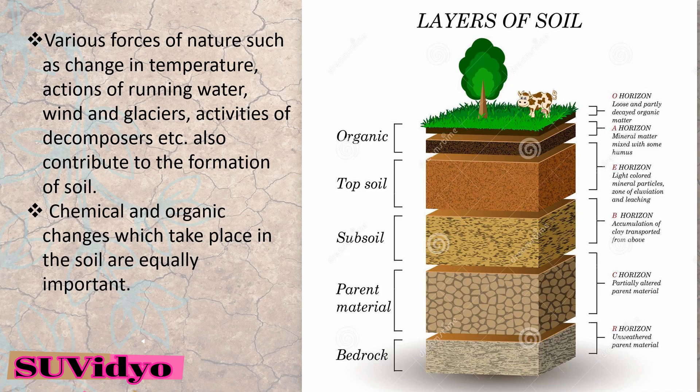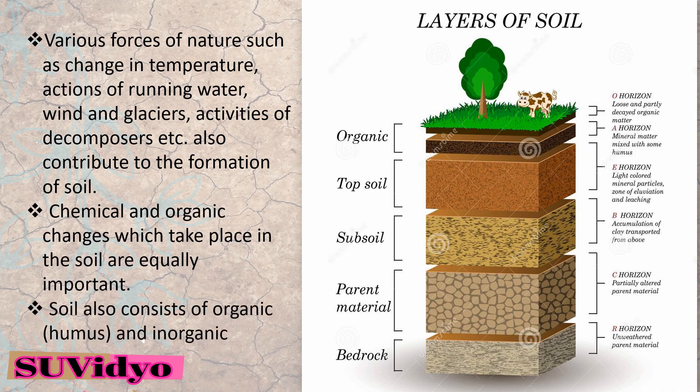Chemical and organic changes which take place in the soil are equally important. Soil also consists of organic material (humus) and inorganic materials. The various layers of soil are organic, topsoil, subsoil, parent material and bedrock. These are also divided into horizons: O horizon, A horizon, B horizon, C horizon and R horizon.